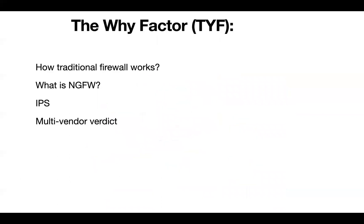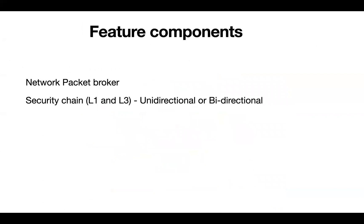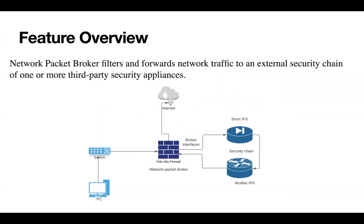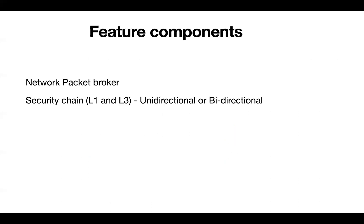To summarize: Network Packet Broker is a feature that helps achieve multi-vendor packet inspection without connecting devices in a daisy-chain fashion. If an IPS device fails, we can configure the firewall to either drop traffic or bypass the security chain using health monitoring — such as ICMP or HTTP monitoring — and forward traffic directly. This avoids the problem of a single device failure blocking all communications.